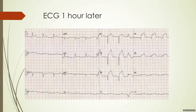One good ECG deserves another. You should never look at an ECG in isolation — always take serial ECGs. An ECG was taken one hour later and now you know the diagnosis. You can see ST elevation in leads V1, V2, V3, V4, V5, V6, and a bit of ST elevation in leads 1 and AVL. This indicates an extensive anterolateral MI.